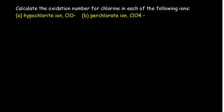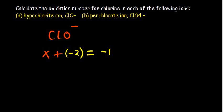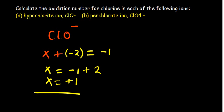Question two: assign the oxidation number for chlorine in each of the following ions. For the first ion with a net charge of minus one (ClO⁻), the sum of oxidation states equals the charge. So X for chlorine plus negative two for oxygen equals negative one. X equals negative one plus two, which gives X equal to positive one. The oxidation state of chlorine is positive one.